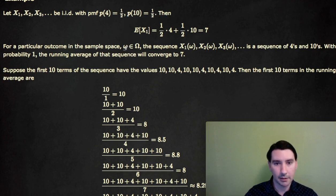So if we take a particular outcome omega in the sample space, remember that the random variables are functions from the sample space to the real numbers. So x1 of omega, x2 of omega, x3 of omega, and so on, is a sequence of 4s and 10s.